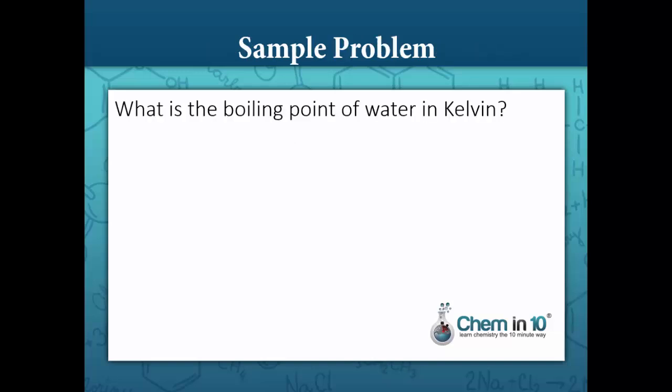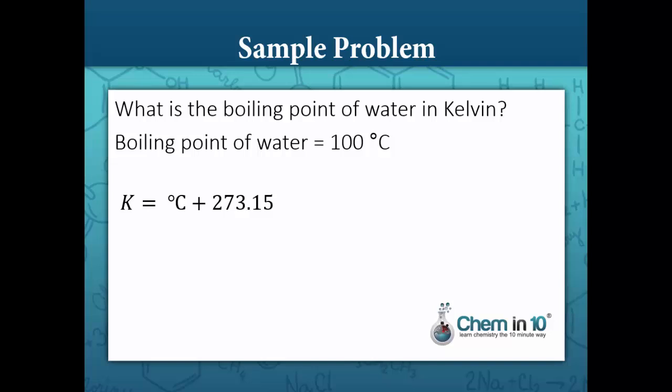Let's look at a sample problem. What is the boiling point of water in Kelvin? The boiling point of water is 100 degrees Celsius. To convert it to Kelvin we plug it into the equation: Kelvin equals degrees Celsius plus 273.15. So 100 degrees Celsius plus 273.15 equals 373.15 Kelvin.